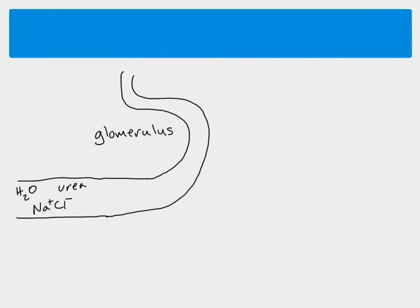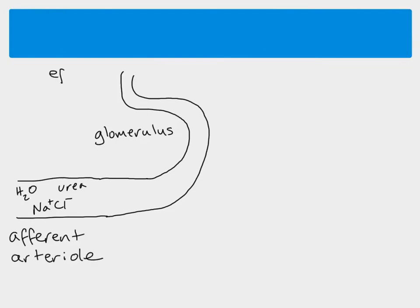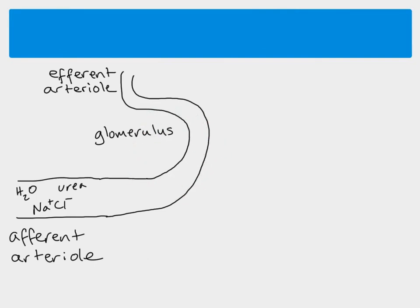The glomerulus is actually a knot of capillaries. We've just simplified it here into a loop, but actually this is a whole network of capillaries next to the Bowman's capsule. The arteriole that comes in — the afferent arteriole — is quite wide, and if we compare it to the efferent arteriole, which is much narrower, the difference in width between the two is what increases the blood pressure of the capillaries inside the glomerulus, and that helps with ultrafiltration.